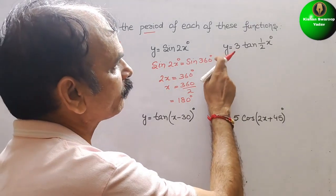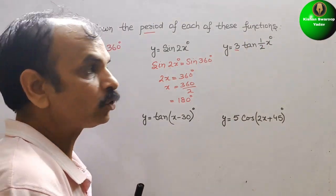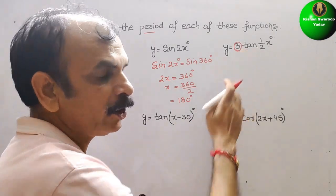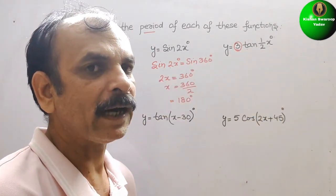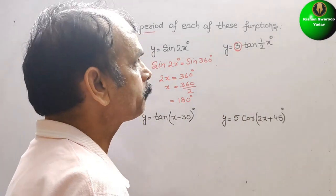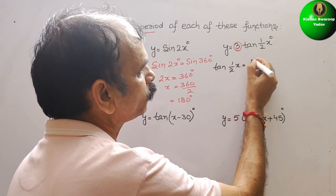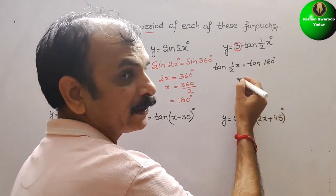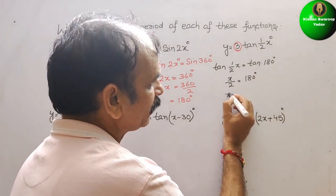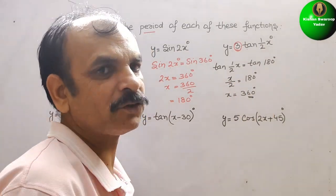Next, y = 3 tan(½x) degrees. The 3 is just the amplification, so we don't need to consider it. Tan completes one cycle in 180 degrees, so we write tan(½x) = tan 180 degrees. That means x divided by 2 = 180 degrees, so x = 360 degrees. The period is 360 degrees.